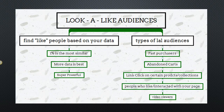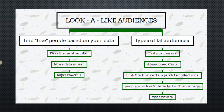The fifth and final way to scale a winning Facebook ad is by using lookalike audiences — this is by far the most powerful method. Facebook will find similar people based on your pixel data. The more data you have, the better the lookalike audience will be. You can literally create audiences of two million or more. When running lookalike audiences, the 1% is most similar to your source audience and is the best starting point, but also test the 2%, 3%, and so on.